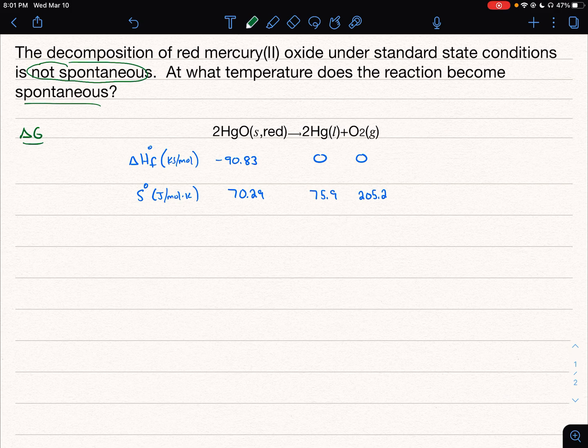And then here is our big hint: temperature. So if you think about at what temperature does the reaction become spontaneous, that's our hint that the equation we're going to use is delta G equals delta H minus T delta S. And what we're going to be solving for in this equation is our temperature.